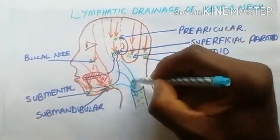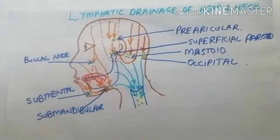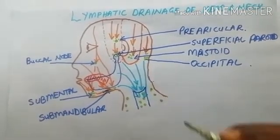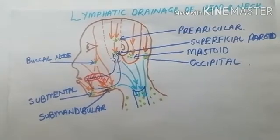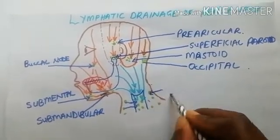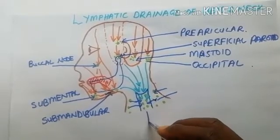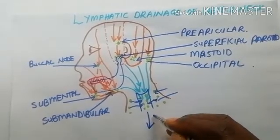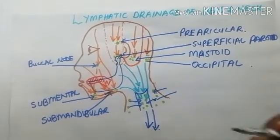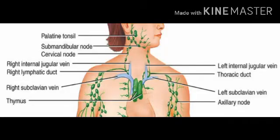Here on the neck, we have the superficial cervical lymph nodes — from the anterior to the posterior — and all of these will be draining into the deep cervical nodes. The deep cervical lymph nodes will then drain downward, and I'm going to show you where they go inside the chest.